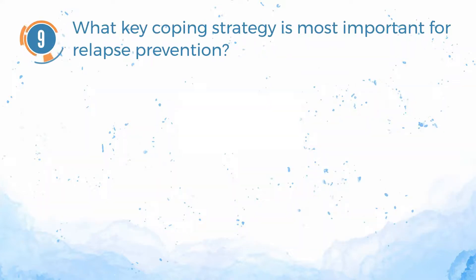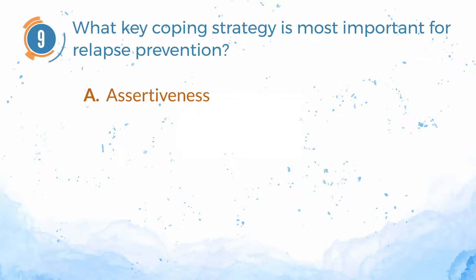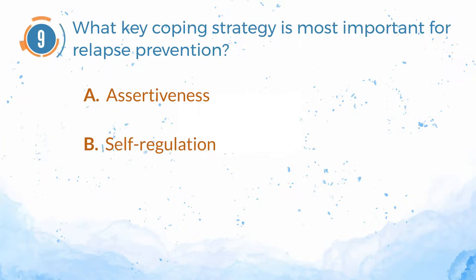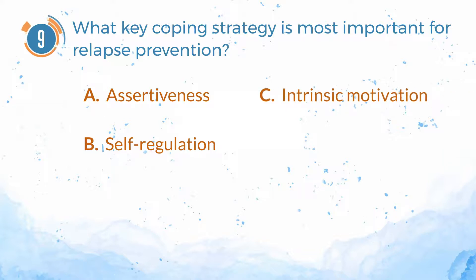Number 9. What key coping strategy is most important for relapse prevention? A. Assertiveness. B. Self-regulation. C. Intrinsic motivation. D. Social support.